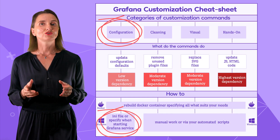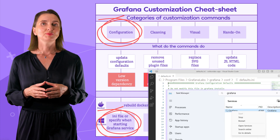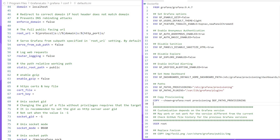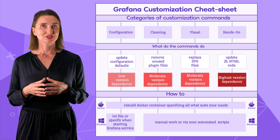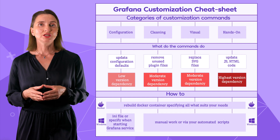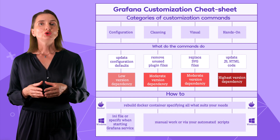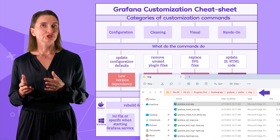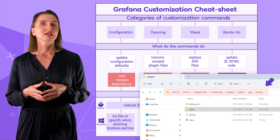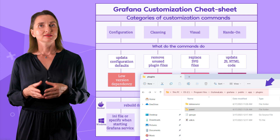Now let's talk about Windows customization. For configuration commands, you can either override defaults in the .ini file or set the environment variables when you start the Grafana service. Please note that the configuration settings from our list have different names from environment variables — it might be a challenge to find the appropriate names for all commands. For the rest of the three categories — cleaning, visual, and hands-on — you can still use our list, but as a guide only. You can manually replace the SVG files in the corresponding folders, which differ from the Docker container, and you need to use different location paths and commands for cleaning. If you ever put together a customization commands collection for Windows, feel free to share it with us — we will be happy to distribute it using our platform, and you will get full credit for it.